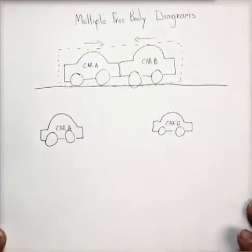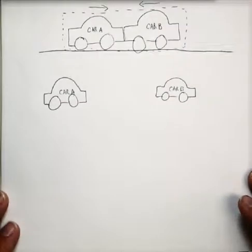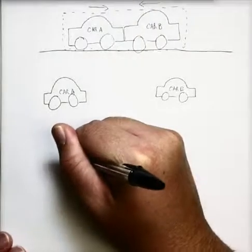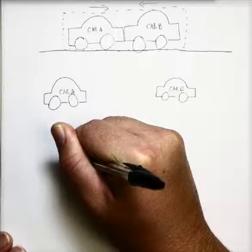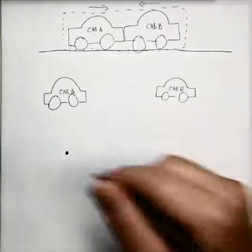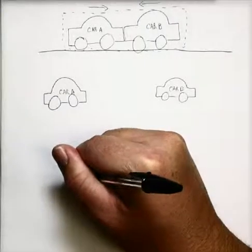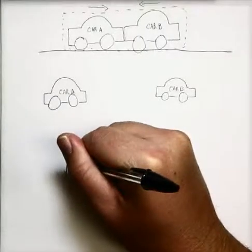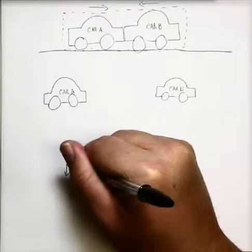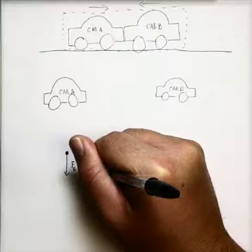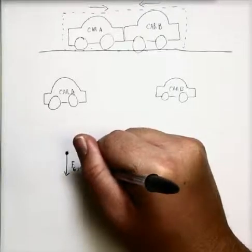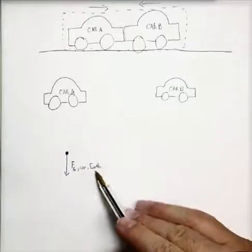So for car A, remember the steps on this. The first thing we're going to do is reduce this down to a point so that it's easier to deal with. And then we start going through all the forces involved on car A. We'll start with the easy one. There is a force due to gravity acting on the car, produced by the earth.